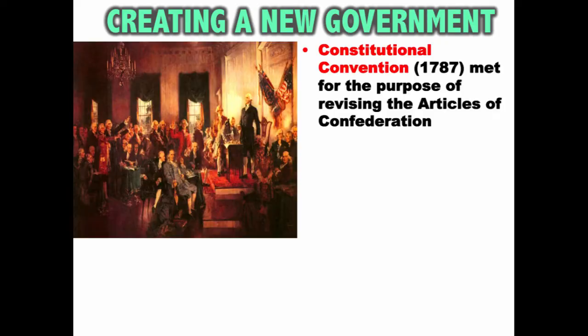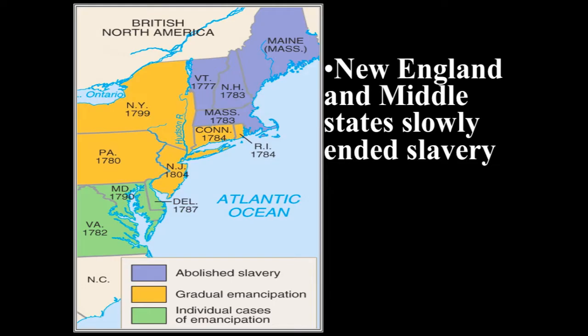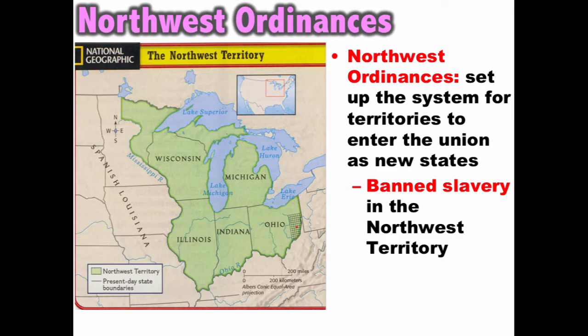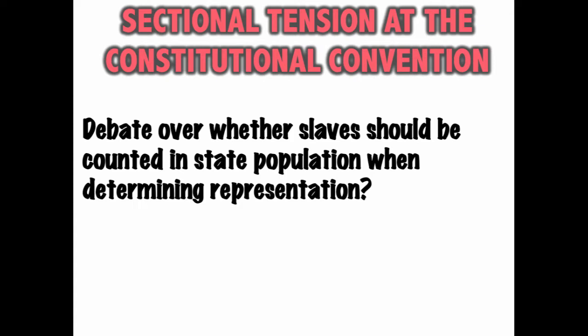Sectionalism has been a part of American history from the get-go. Recall when they were creating a new government at the Constitutional Convention in 1787 — there will be sectional tension. Now, all of the original 13 colonies had slavery, but after the American Revolution, the New England and Middle States slowly ended slavery. Under the Articles of Confederation, the Northwest Ordinances set up the system for territories to enter the Union as new states, and they also banned slavery in territory north of the Ohio River. The sectional tension at the Constitutional Convention was a debate over whether slaves would be counted in state population when determining representation.